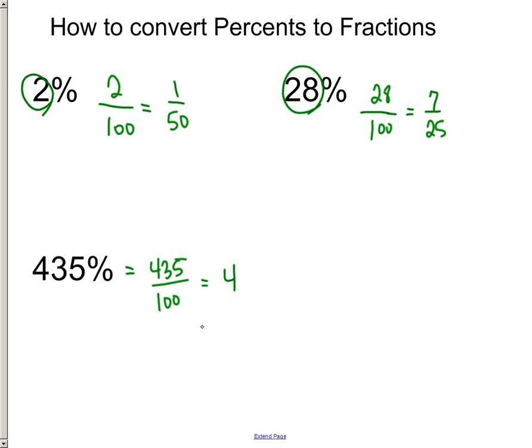4 times, that would be 400. 4 times 100 is 400, so you've got 35 left over, and then you just keep the same denominator, and then you can simplify the fraction.